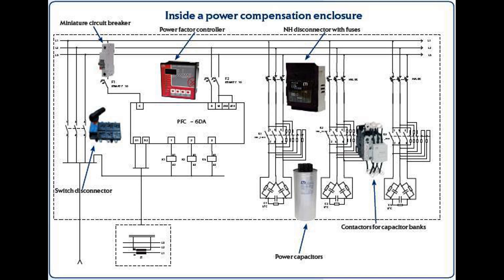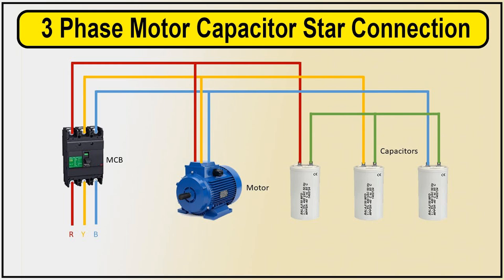Harmonic distortion can have detrimental effects on sensitive equipment such as transformers, motors, and electronic devices. Detuned capacitors help protect equipment by reducing harmonic distortion and preventing excessive heating, insulation breakdown, and premature failure. Detuned capacitors require careful sizing and placement in the electrical system to effectively mitigate harmonic distortion. They are typically installed in parallel with the load or in a dedicated harmonic filter bank to ensure optimal performance.